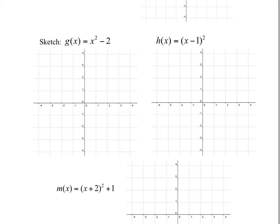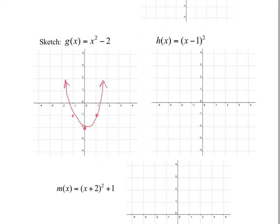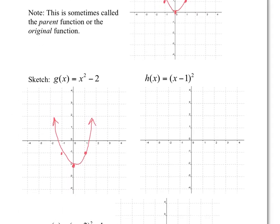Using this graph, we're going to sketch these graphs over here. This first one is x squared minus 2. This minus 2 is going to move the graph down. So instead of starting at (0, 0), we're going to move the vertex to (0, negative 2). Every single point moves in the exact same direction — the two points that were there before are going to move down 2. It's the same graph, just moved down 2.